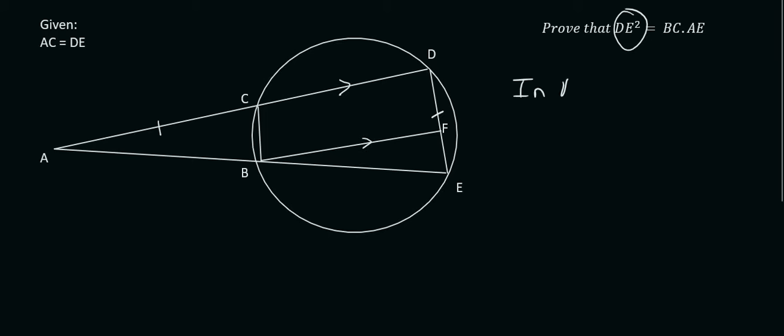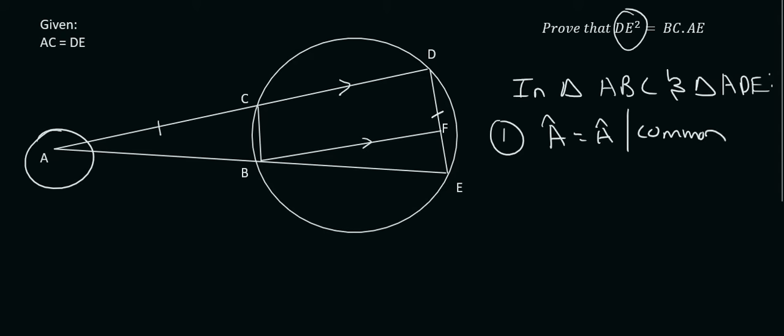We're going to be working in triangle ABC and triangle ADE. Remember, the order doesn't matter at that point. You're just telling the teacher what triangles you are working in. We need to find three angles that are the same in those two triangles. Both triangles make use of this angle here, so we can say that angle A is equal to angle A, and the reason for that is common.